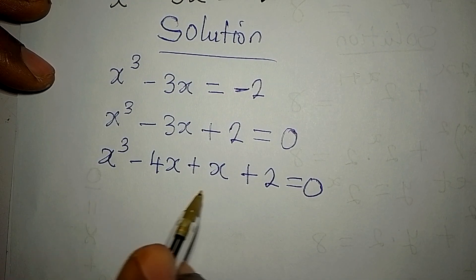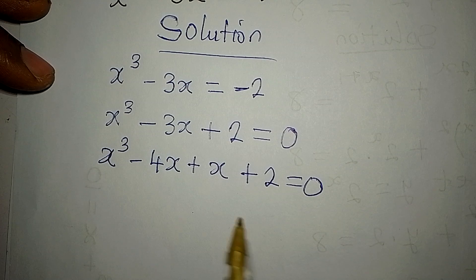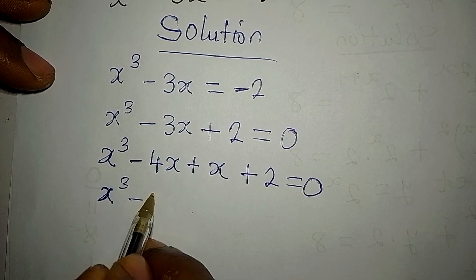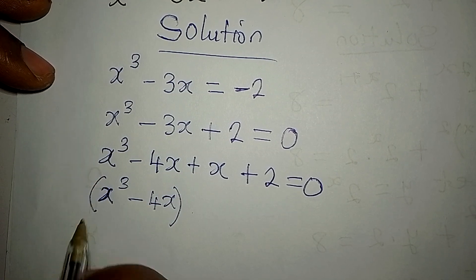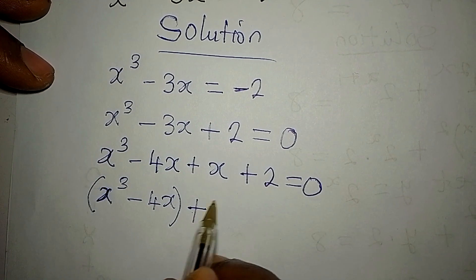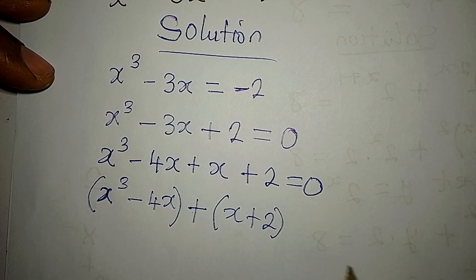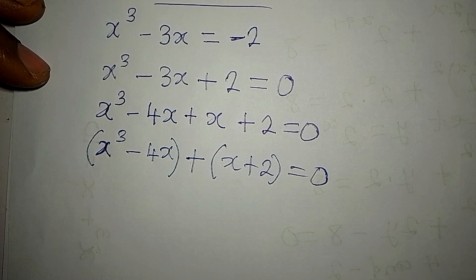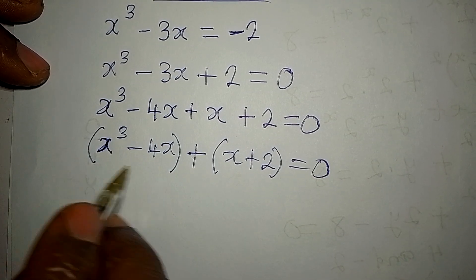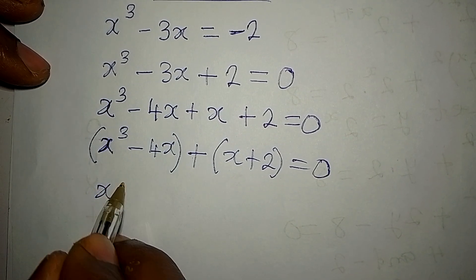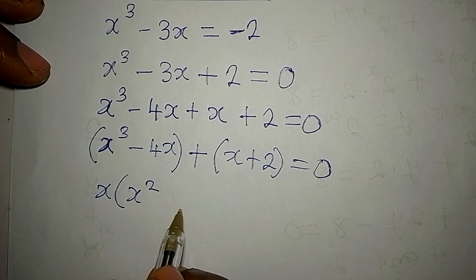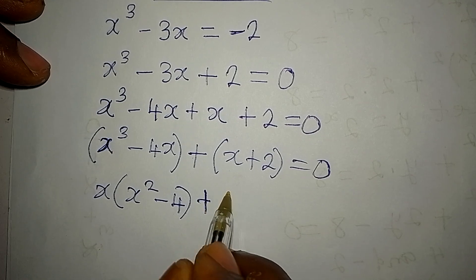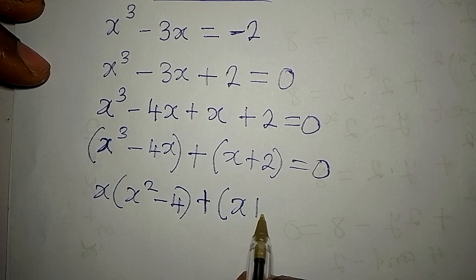From here we can now group into two and factorize. I will factorize x to the power of 3 minus 4x separately, and then x plus 2, all equal to zero. From the first group, x is common to both terms, so x is a common factor, giving us x(x squared minus 4), then plus (x plus 2).